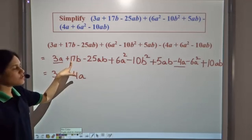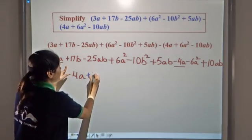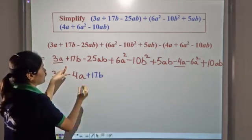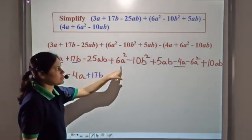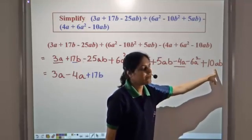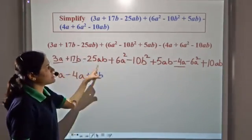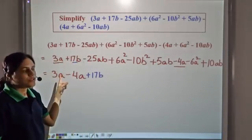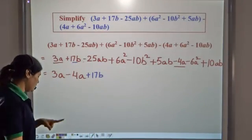Now let's come to b. We have plus 17b. Looking through all the remaining terms — ab, a squared, b squared — there is no other term containing only b. So we write only 17b.